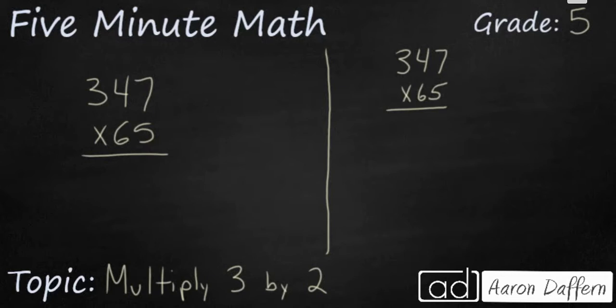Whenever you start multiplication, you always start with the ones place here, so this is the 5 right here on the bottom number. And then you multiply that by the ones place, the tens place, and then the hundreds place on the top number. But I'm going to do those separately.